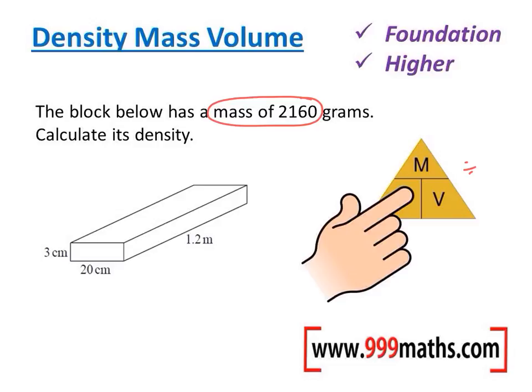Now the volume I'll have to work out. The volume of course is the height of the block times the width of the block times the length or the depth of the block. One slight problem in this question is that the units are in centimeters for the height and width but in meters for the length, so I'm just going to change that length into centimeters to 120 centimeters. Okay, so the volume of that block will be 3 times 20, the area at the end, and I'm going to then multiply that by the length or the depth which is 120.